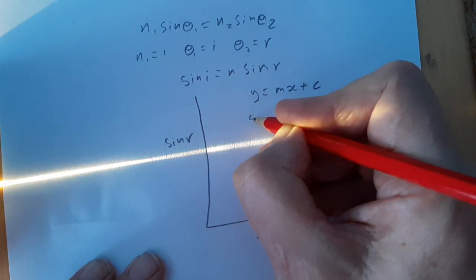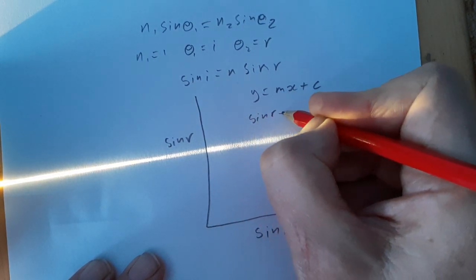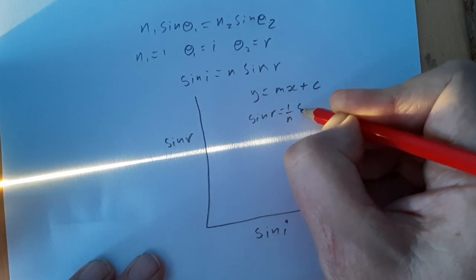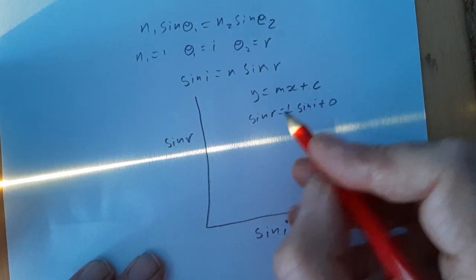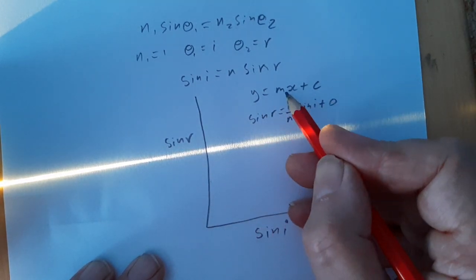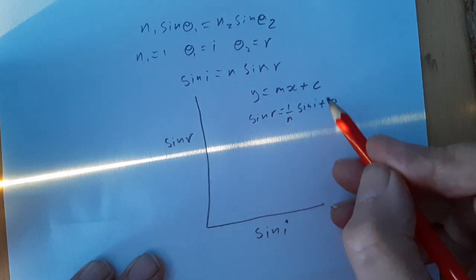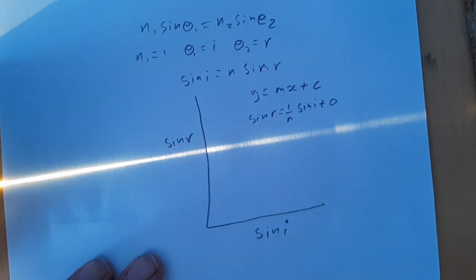So, you get sin R equals 1 over N sin I plus 0. So, sin R is Y. 1 over N is the gradient M. Sin I is X. And there should be no intercept. It should be a straight line through the origin. And we have got a point that will be the origin, although we don't necessarily use that point. No, we do use it as a point, but we don't force it through that point. There's no more a point than any other reading.